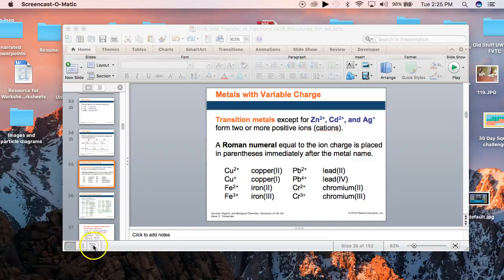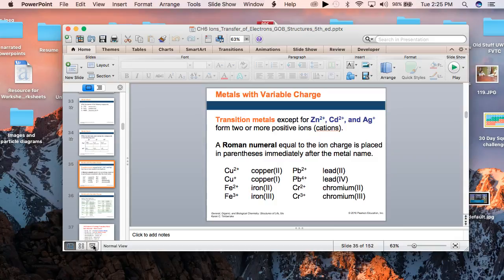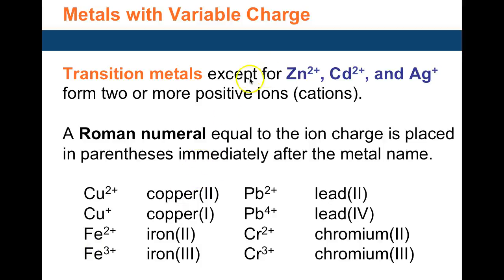Continuing with section 6.3, we are looking at metals which have variable charges. These are the transition metals found in the B group. The A group metals are the representative elements and they only form one kind of metal ion. Group 1A, 2A, and aluminum in group 3A form only one type of metal ion, and the charge on the ion is numerically equal to the group number.